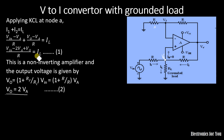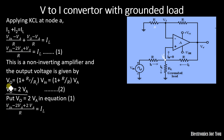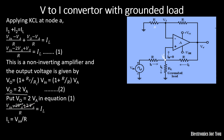Now substituting VO equals 2VA into equation number 1, we get VIN minus 2VA plus 2VA upon R equals IL. The minus 2VA and plus 2VA cancel, therefore IL equals VIN upon R. Since R is constant, IL is directly proportional to VIN, that is load current is directly proportional to input voltage.